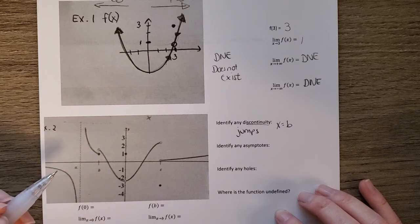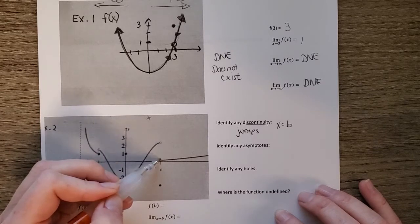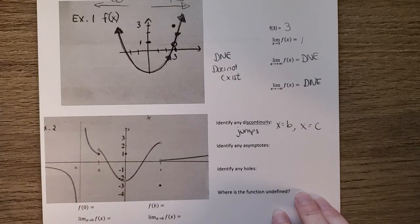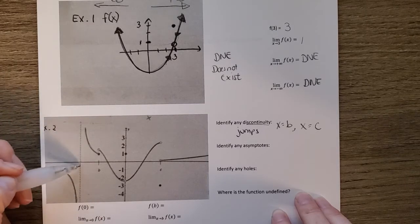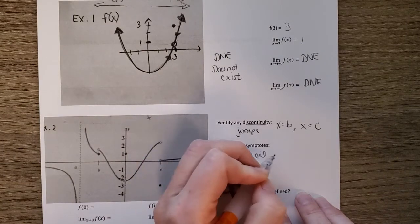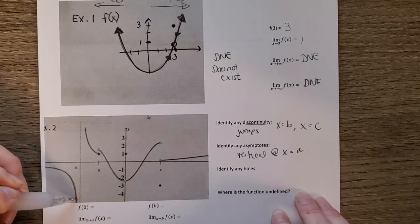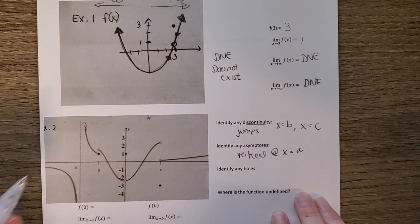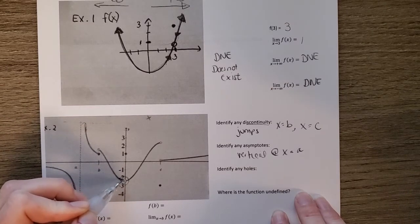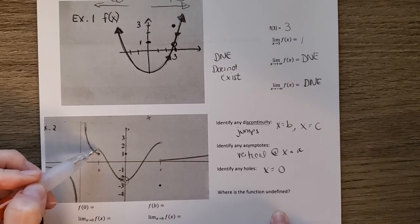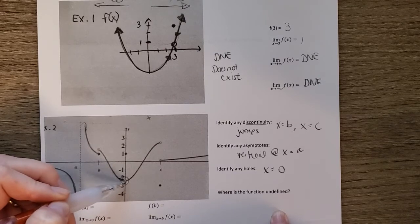Asymptotes are vertical or horizontal boundary lines that the graph approaches from both directions. There's a vertical asymptote at x equals a. Holes are openings in the graph — there's a hole at x equals zero. The function is undefined at x equals a because the graph cannot touch or include that value. Everywhere else, since open circles are paired with solid points, every value is included except at the asymptote.